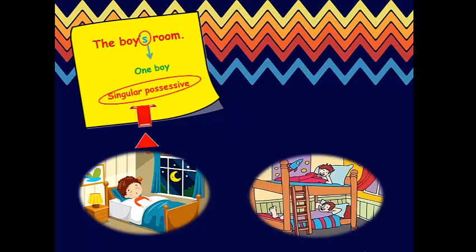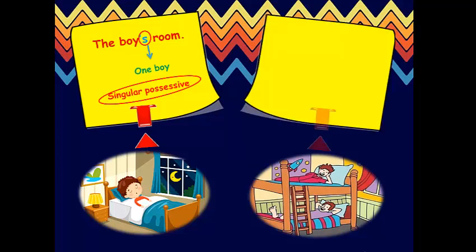But now, we have multiple boys owning the same room. So, we have to start with plural form, because we know we are talking about more than one boy. So, when you have plural form, all we need to do to make it possessive is add an apostrophe at the very end of the word.